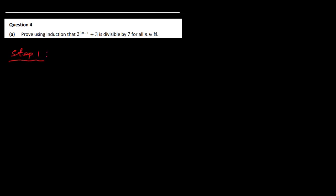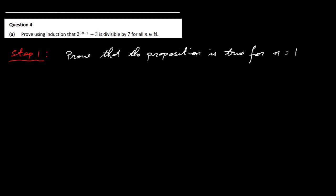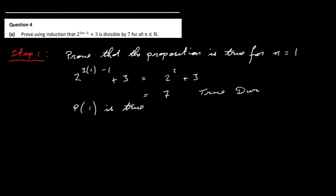Step 1: we've got to prove that it's true for n equals 1. So we take 2 to the power of 3 times 1 minus 1 plus 3. That gives us 2 to the power of 2 plus 3, which is 4 plus 3, which is 7. This is divisible by 7, so P1 is true.